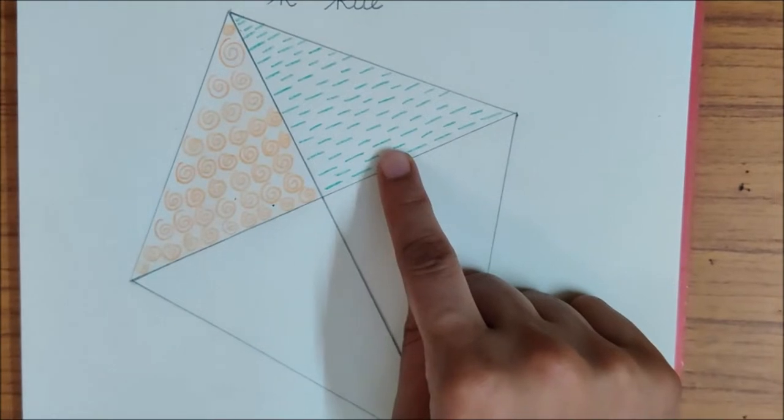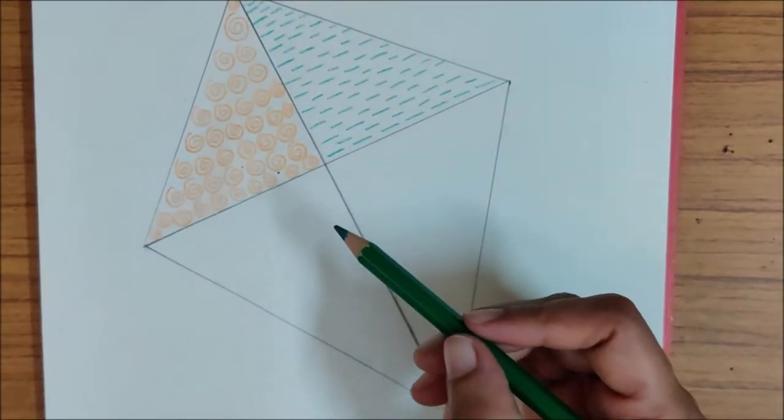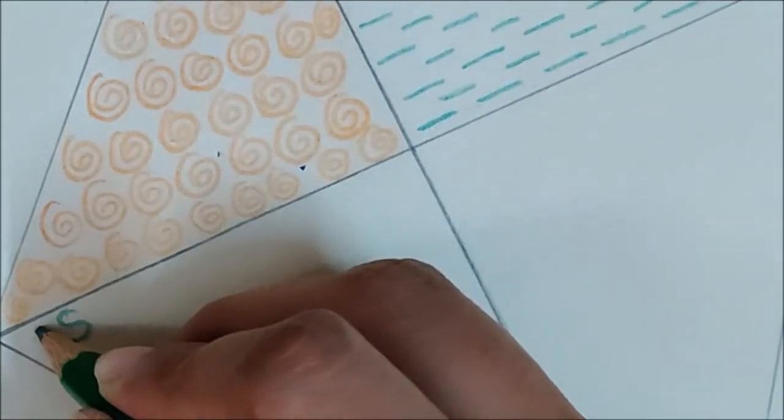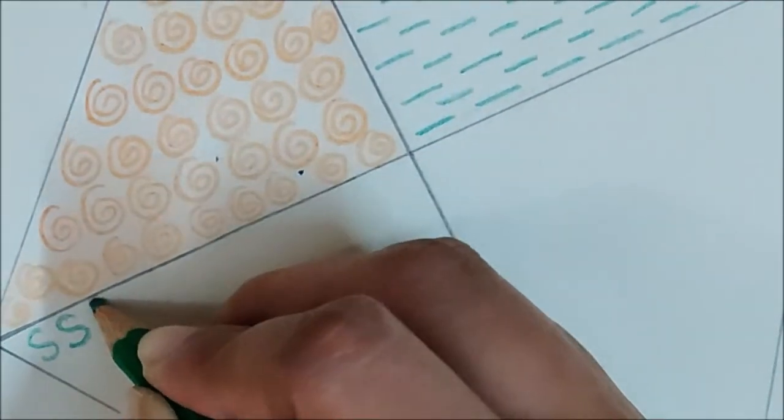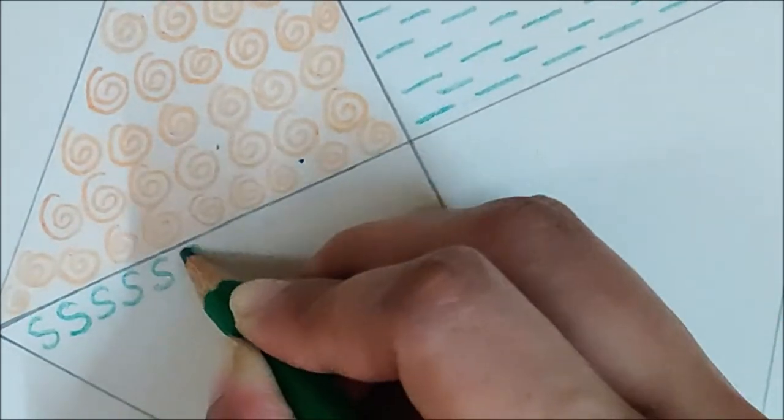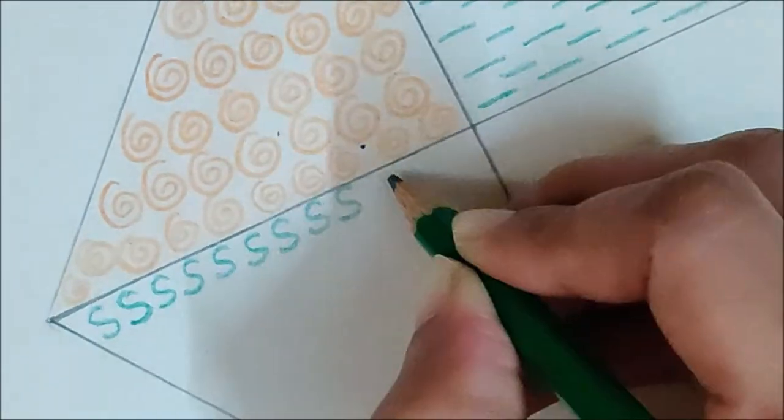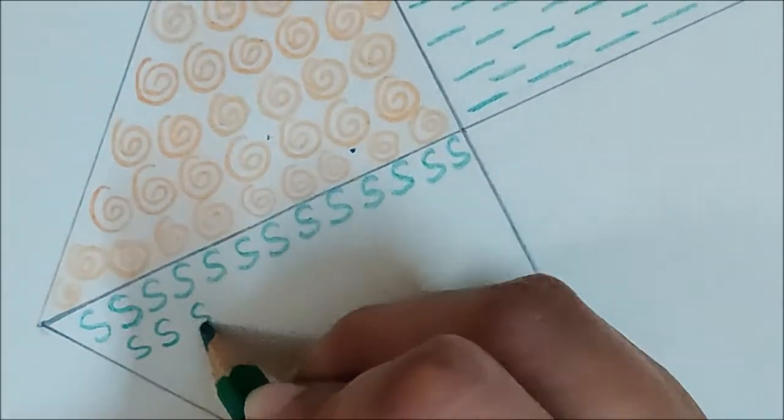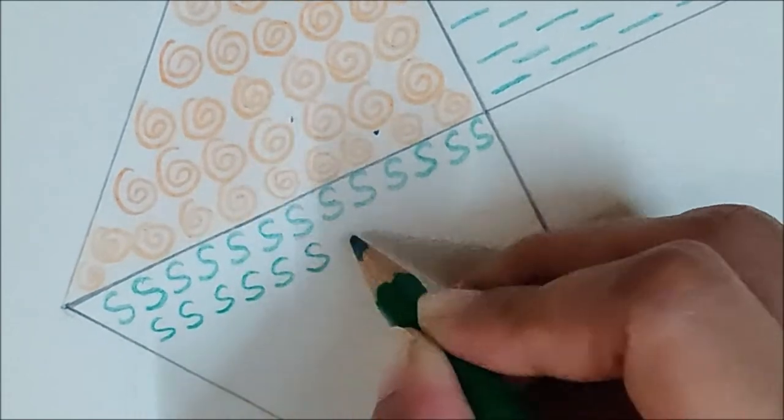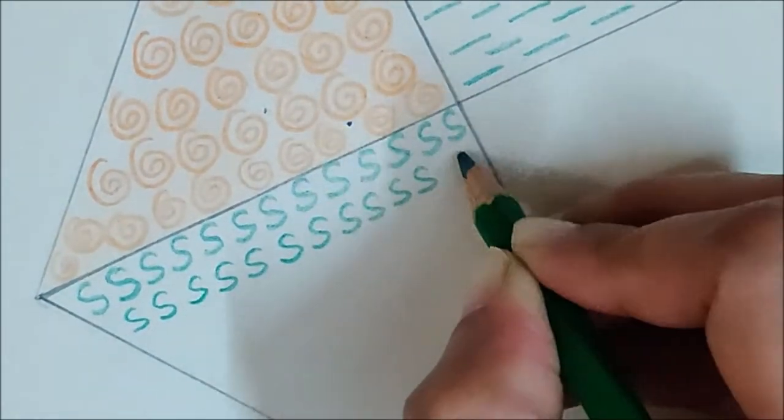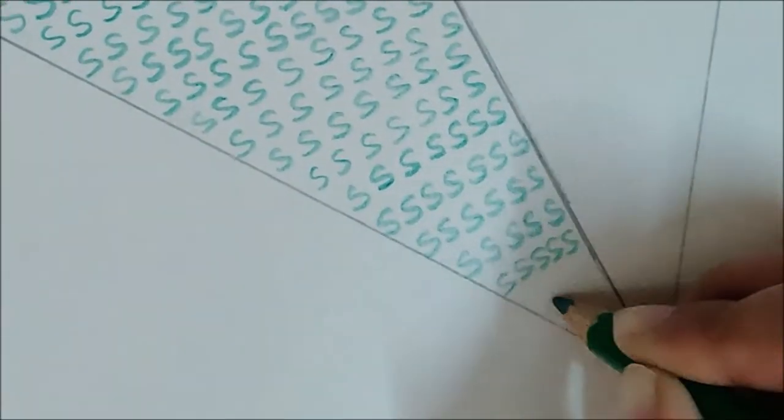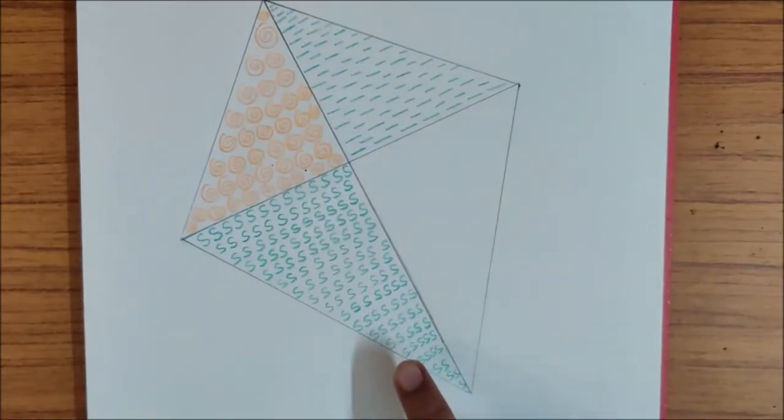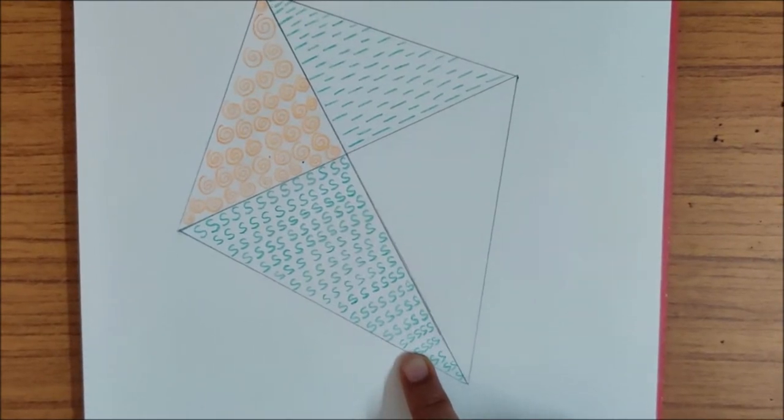Jalebi pattern here, sleeping lines here. Now in this box, with green pencil, I will make S pattern. So children, make S pattern like this in this box. See, I have made S pattern here. So you can make little big S.